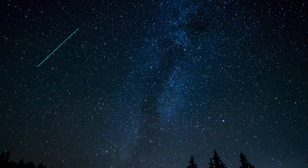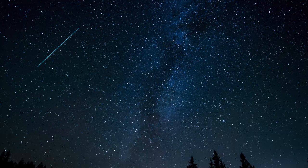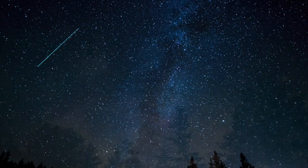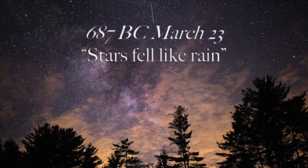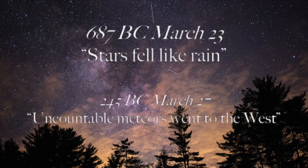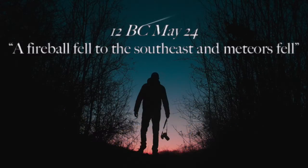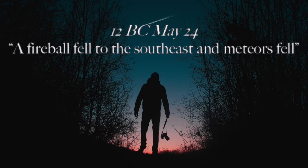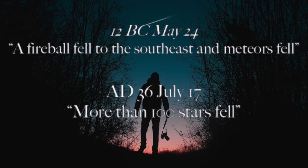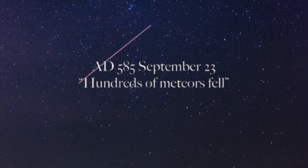For millennia, humans have seen streaks of lights in the sky and pondered their origins. People of the Orient described: Stars fell like rain. Uncountable meteors went to the west. A fireball fell to the southeast, and meteors fell. More than one hundred stars fell. Hundreds of meteors fell.